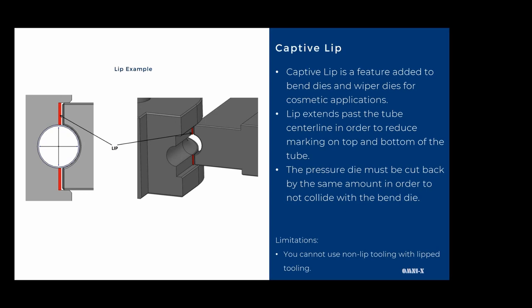Captive lip is a feature added to bend dies for cosmetic applications. The lip extends past the tube center line to reduce marking on the top and bottom of the tube. The pressure die must be cut back by the same amount of material in order to not collide with the bend die. The limitation is that you cannot use non-lip tooling with lip tooling.